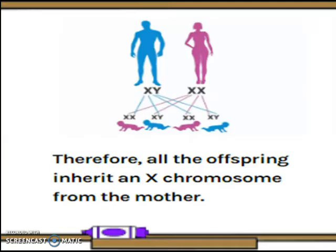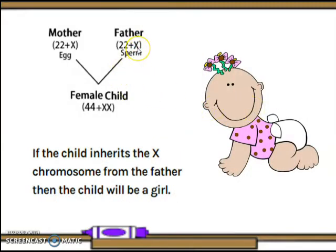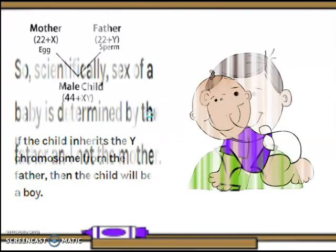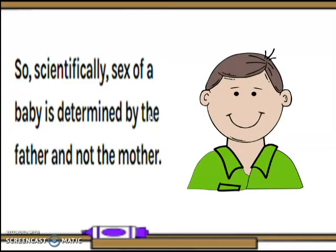Therefore, all offspring inherit an X chromosome from the mother. If the child inherits the X chromosome from the father, then the child will be a girl. If the child inherits the Y chromosome from the father, then the child will be a boy. So scientifically, the sex of a baby is determined by the father and not the mother. Females have two X chromosomes, one inherited from either parent, denoted as XX. Males have one X and one Y chromosome, where the X is inherited from the mother and Y from the father. We can say that the absence of the Y chromosome makes the individual a female.